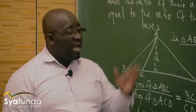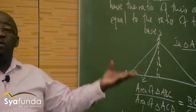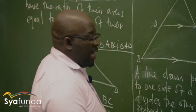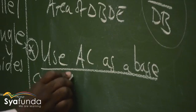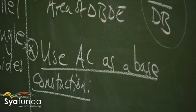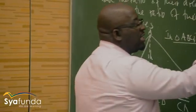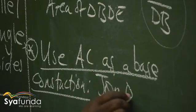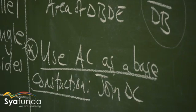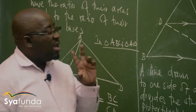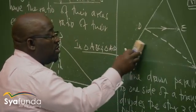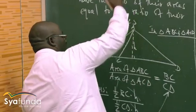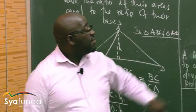Now I want to use AC as a base, and I want to create this scenario in that diagram. I do my construction: I'm going to join DC. That is my construction — join DC, and also create an altitude. When I join DC, this part goes, and this is what I have now. I have two triangles again: this triangle and this triangle.